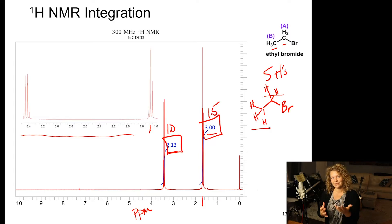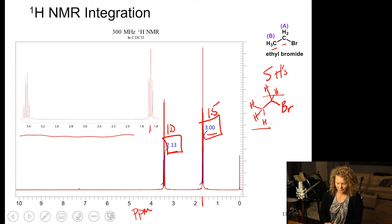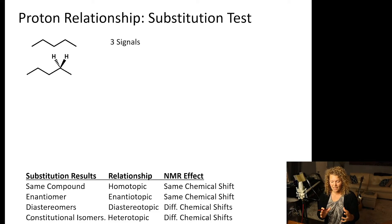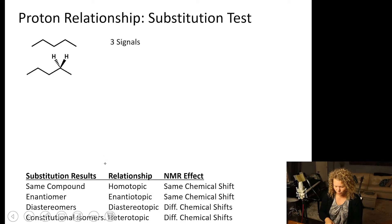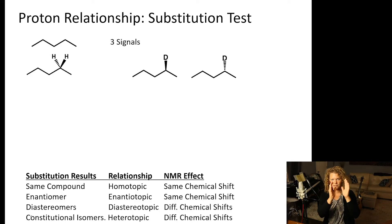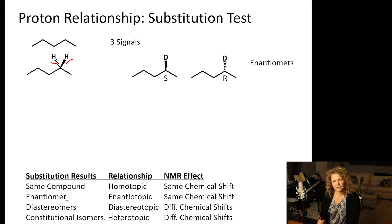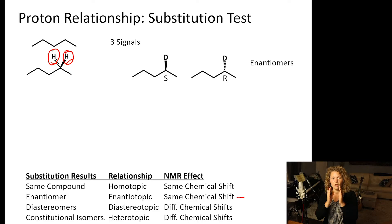We're now going to walk through the substitution test, especially useful for more complicated structures. Here we have pentane. We take 2 protons on a CH₂ and substitute one with a deuterium. If we replace one of the protons with deuterium, we get two compounds. We ask: what is the relationship between them? Here we have enantiomers — S and R. Enantiomers give the same chemical shift, meaning those 2 protons occur at the same signal.